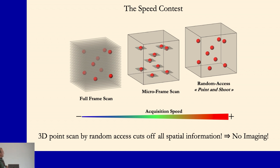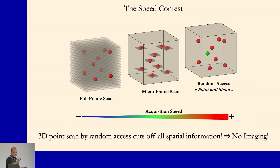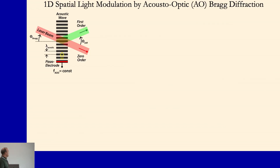Many groups have tried different methods. One approach is a full-frame scan, but it's slow. People have tried microframes — small frames around the neuron of interest — which reduces sensitivity to motion artifacts but still sacrifices temporal resolution. What we aim to do is fast random-access scanning in 3D with what we call 'point and shoot': you just send light on the neuron of interest. You lose images — you are no longer making images — but you gain point information in 3D.